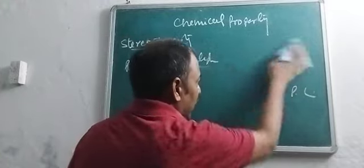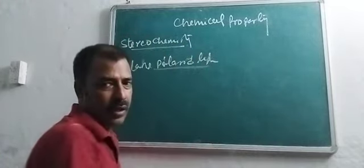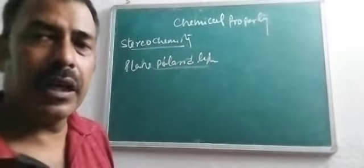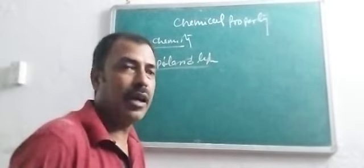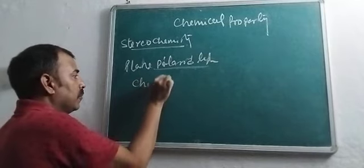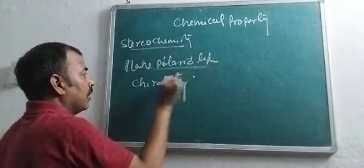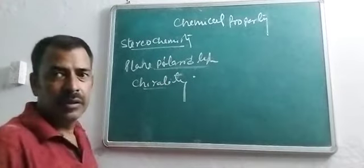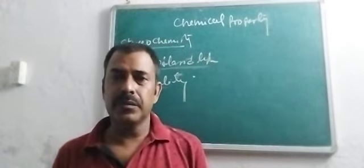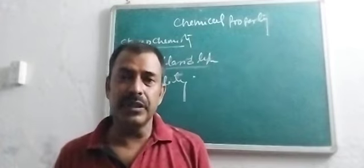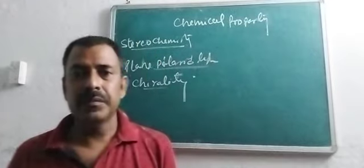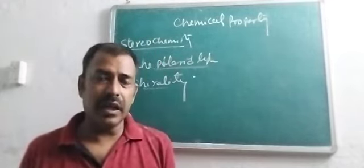This property is called chirality — chiral and chirality. Those compounds or species which have a non-superimposable mirror image are called chiral, and the phenomenon is called chirality.